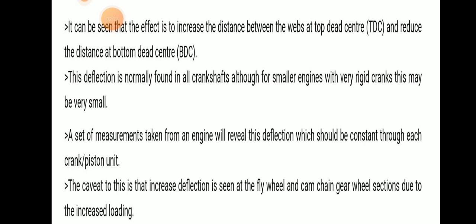The distance between the webs at TDC increases and at BDC it reduces — they come closer. This deflection is normally found in all crankshafts, although smaller engines with very rigid cranks may show very small deflection. A set of measurements taken from an engine will reveal a deflection which should be constant through each crank and piston unit. However, increased deflection is seen at the flywheel and cam chain gear wheel section due to increased loading.